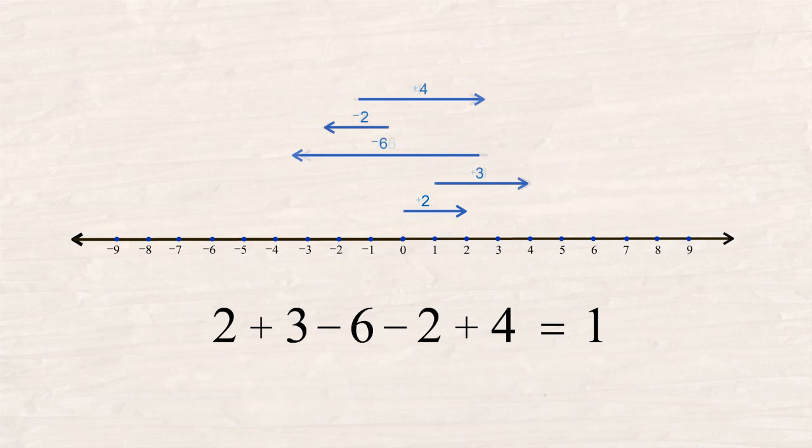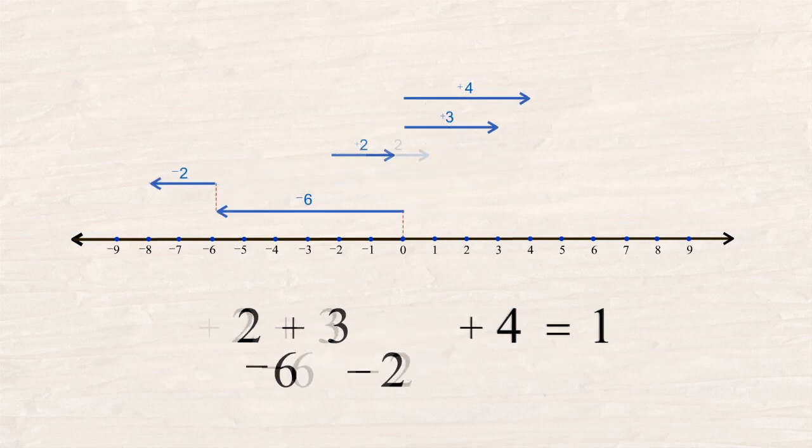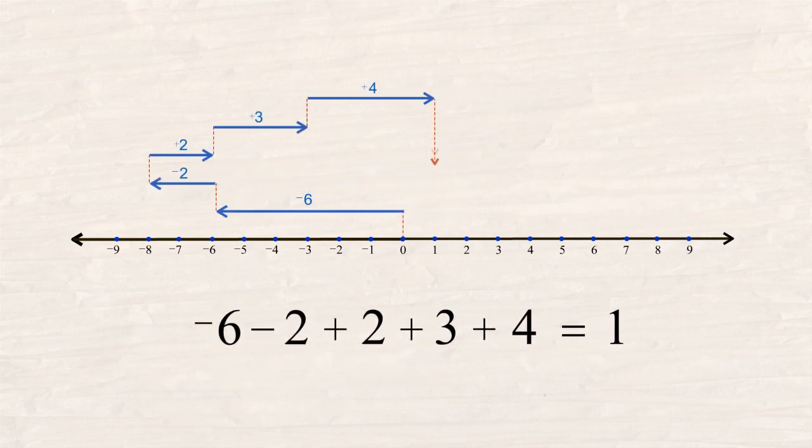However, because of the commutative property, we are free to rearrange the sequence of numbers in any order we like. For instance, we could add all the negative numbers first, and we still get the same result.